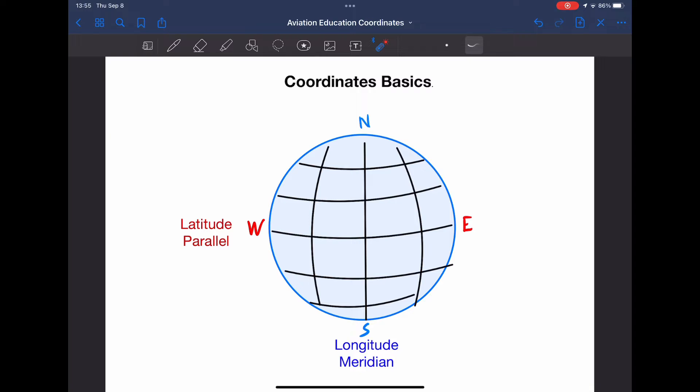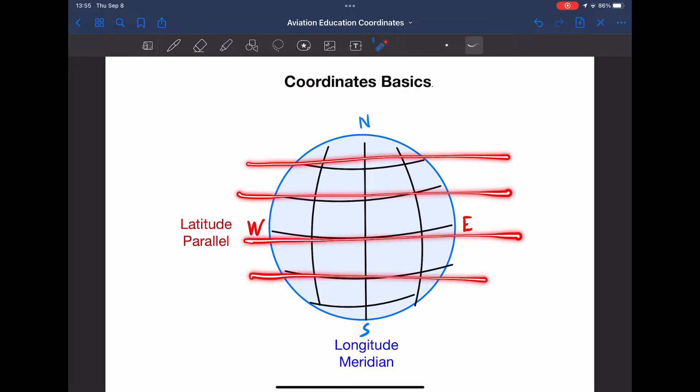I'm certain everyone has heard of the words latitude and longitude before, but when you go into the specifics, I'm sure sometimes people mistake which one's which. The easiest method that I use to remember these two words are consider latitude like a ladder, like rungs on a ladder. The rungs go from left to right. Regarding the word longitude, well, we already know what latitude is, so obviously longitude is going to be the vertical lines.